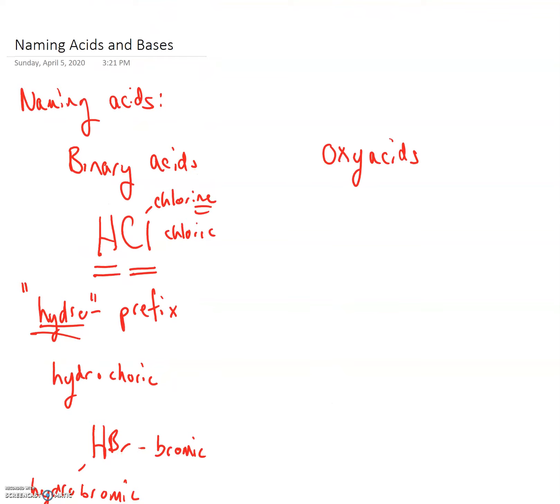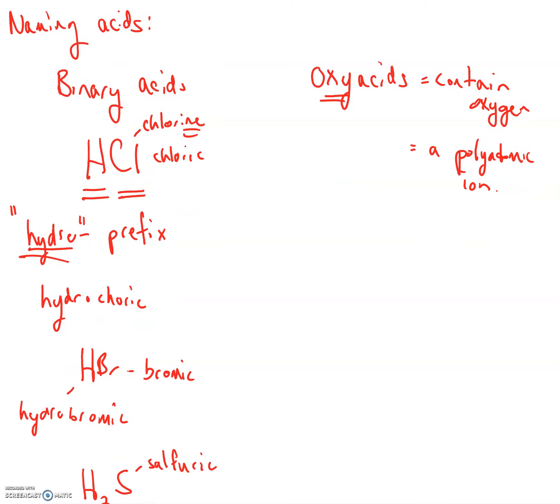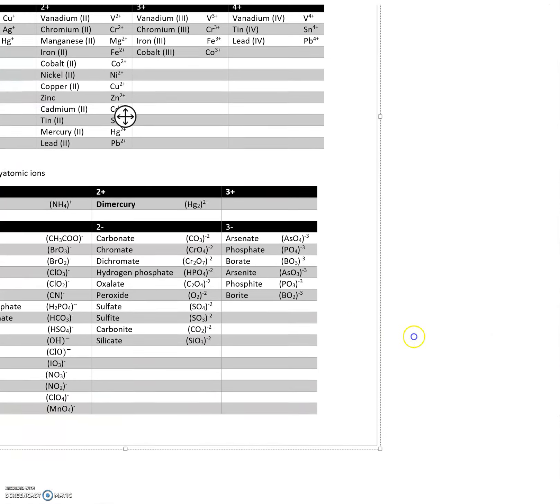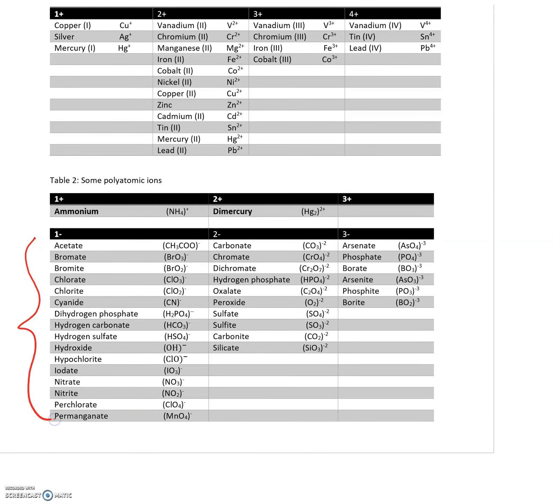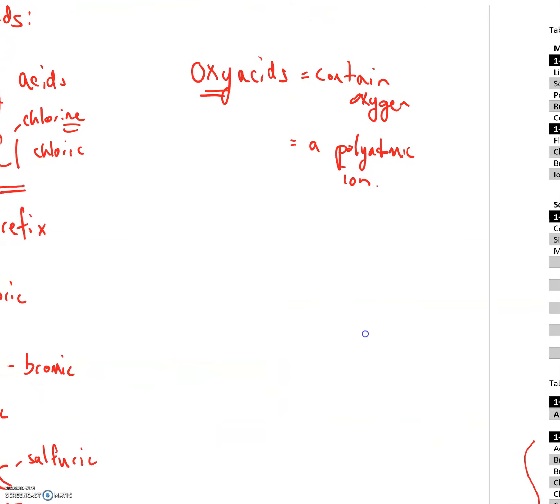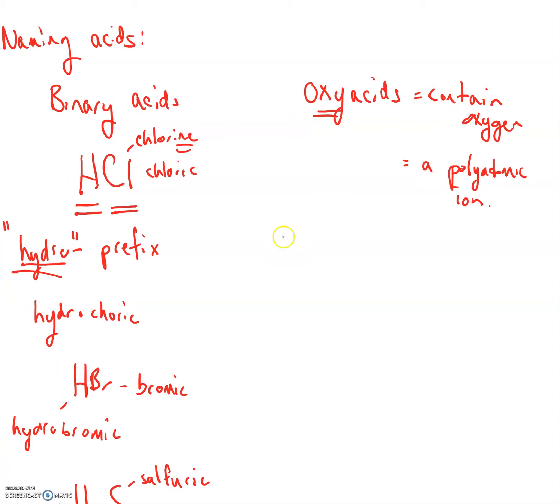Oxy acids are simpler and a little bit more complicated. We call them oxy acids because they contain oxygen, but not really. That's a way of saying they contain a polyatomic ion. So your list of polyatomic ions is right here. All of these guys. Anytime you have a polyatomic ion, that is what we're going to call an oxy acid. They're real simple. First off, no hydro- prefix. So don't even worry about it.